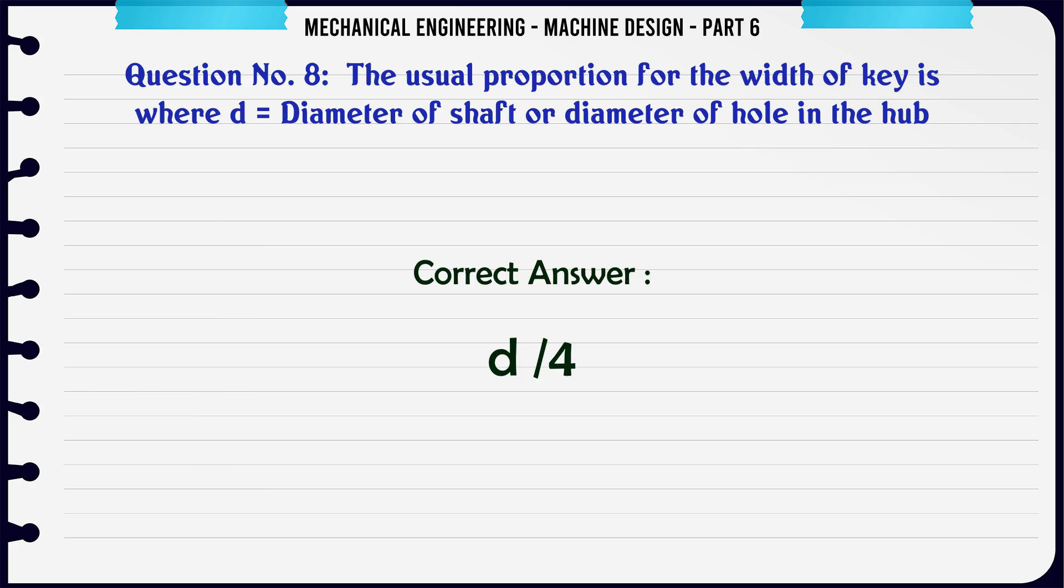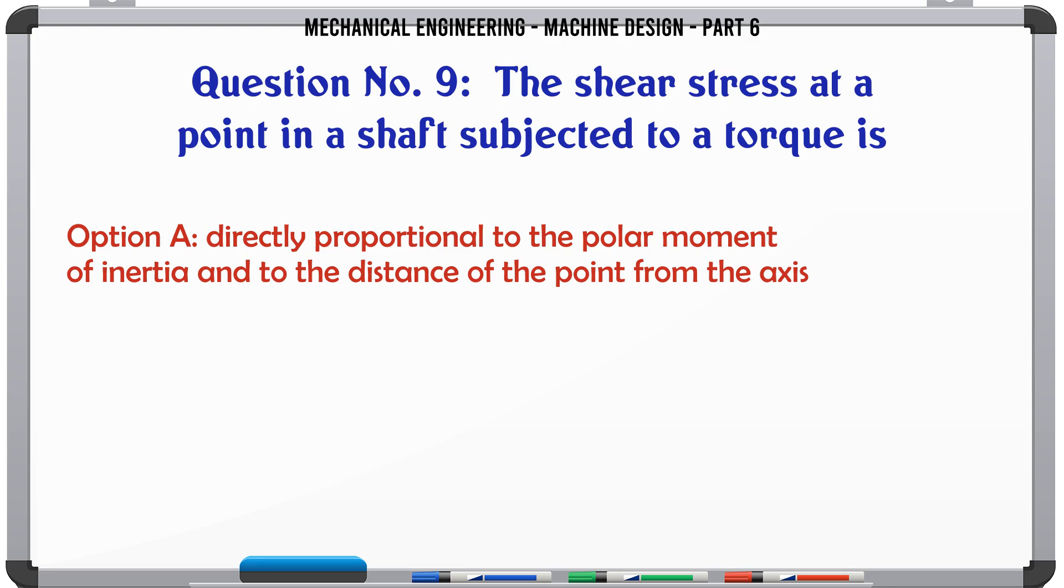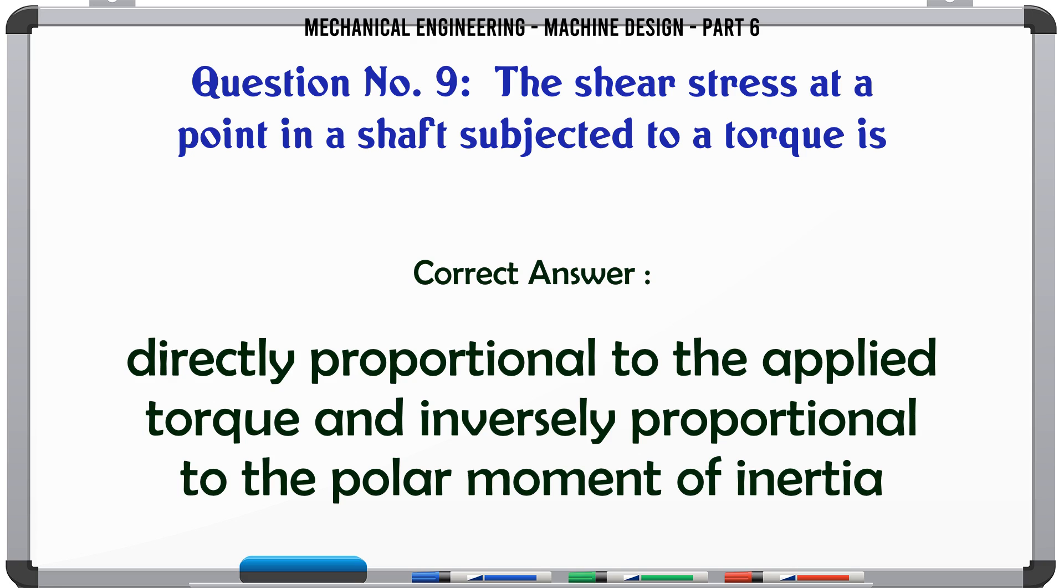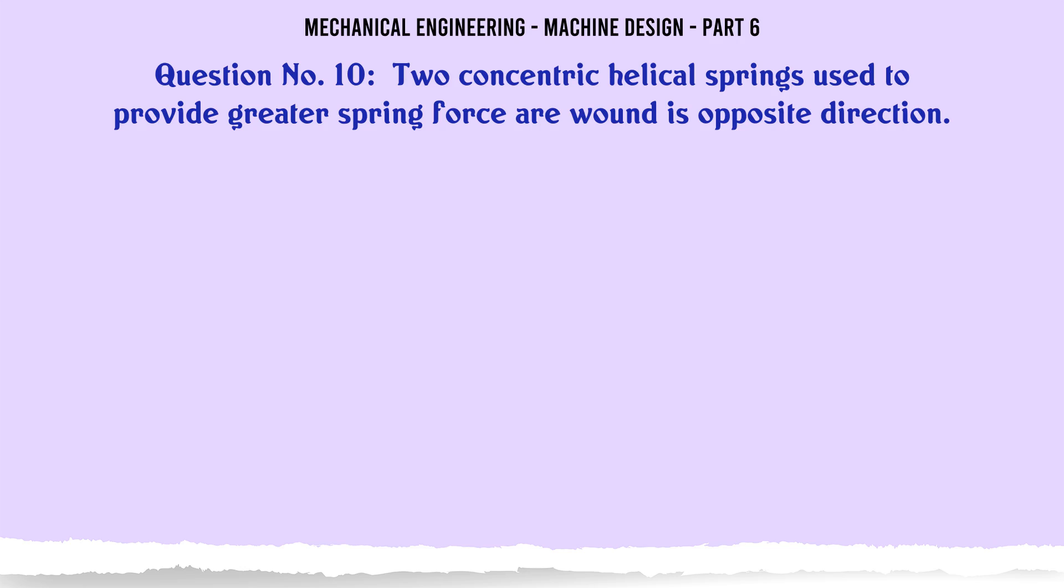The shear stress at a point in a shaft subjected to a torque is: A) directly proportional to the polar moment of inertia and to the distance of the point from the axis, B) directly proportional to the applied torque and inversely proportional to the polar moment of inertia.